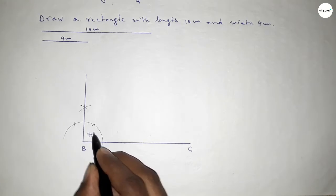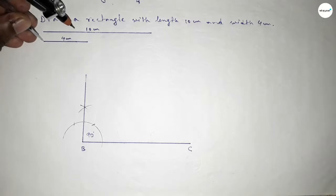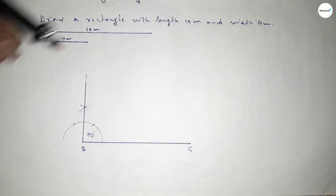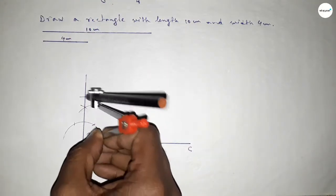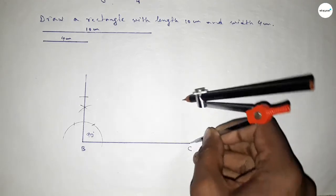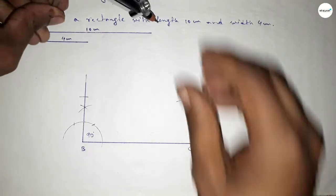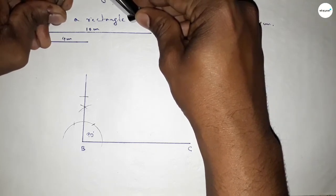Now taking the length 4 centimeter. Putting the compass here and cutting here to mark the 4 centimeter breadth. Then putting the compass at the next point and cutting here. Now taking the length 10 centimeter using the compass.